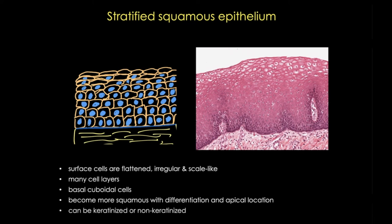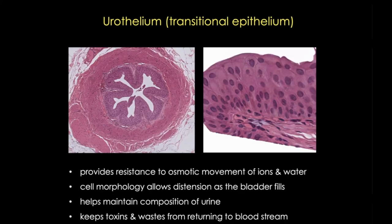Now let's take a look at urothelium. Recall that urothelium, as shown here in the ureter, is important for helping to keep the hypertonic urine from returning to the blood or from leaking out and damaging our tissues. It also needs to be able to distend as the bladder fills without rupturing or leaking. Therefore, the morphology of this tissue reflects these different needs.